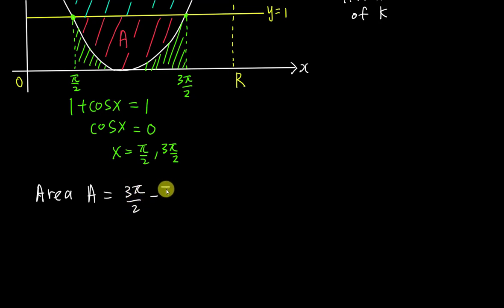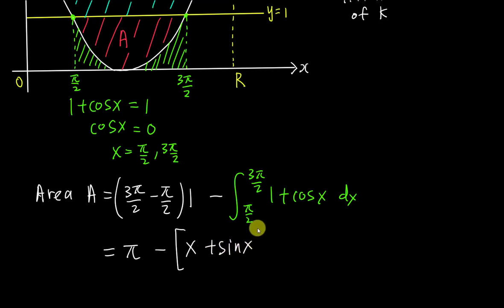I will say Area A equals the rectangle, which is 3π over 2 minus π over 2 times the height which is 1, minus the green color area. I need to integrate from π over 2 to 3π over 2, 1 plus cos x dx. This is π minus, integrating 1 gives me x, integrating cos x gives me sin x, evaluated from π over 2 to 3π over 2.